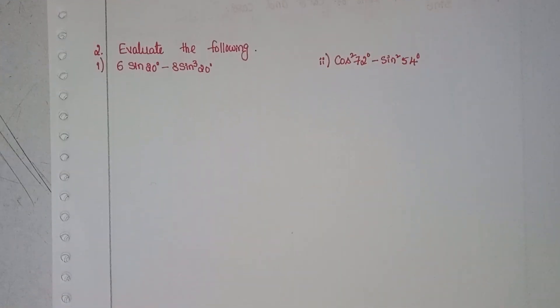Welcome back to our channel. Today we will discuss intermediate first year 1A chapter number 6, trigonometric ratios up to transformations, exercise 6D first moment, second problem.